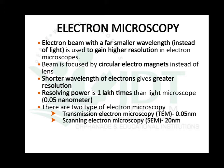Electron microscopes use an electron beam with a far smaller wavelength instead of light, to gain higher resolution. In electron microscopy, the beam is focused by circular electromagnets instead of lenses — lenses are used in optical or light microscopy, but in electron microscopy we use magnets instead.